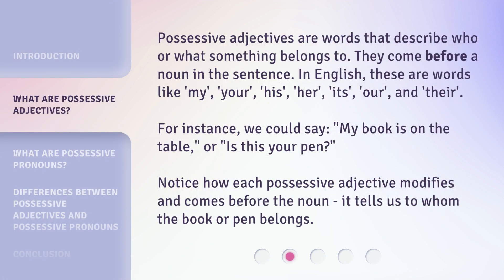Possessive adjectives are words that describe who or what something belongs to. They come before a noun in the sentence. In English, these are words like: my, your, his, her, its, our, and their. For instance, we could say, 'My book is on the table,' or 'Is this your pen?' Notice how each possessive adjective modifies and comes before the noun. It tells us to whom the book or pen belongs.